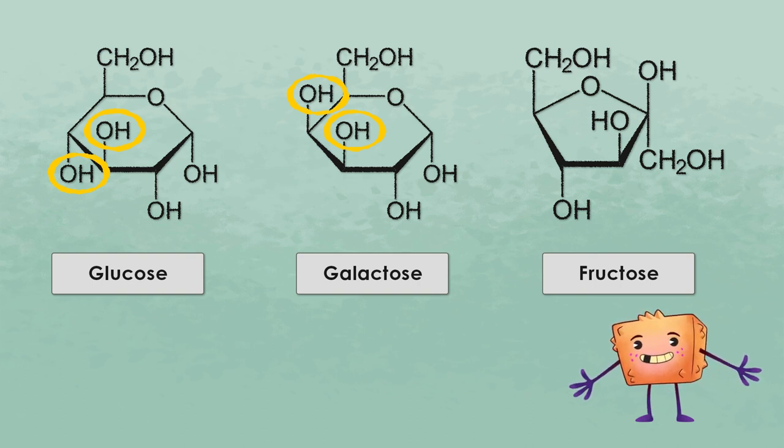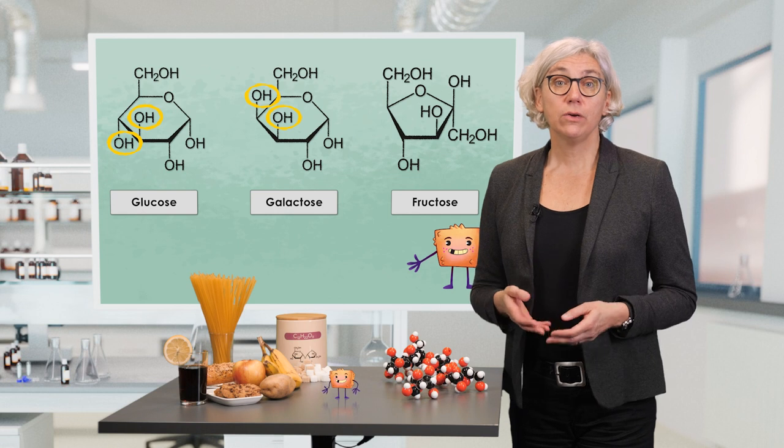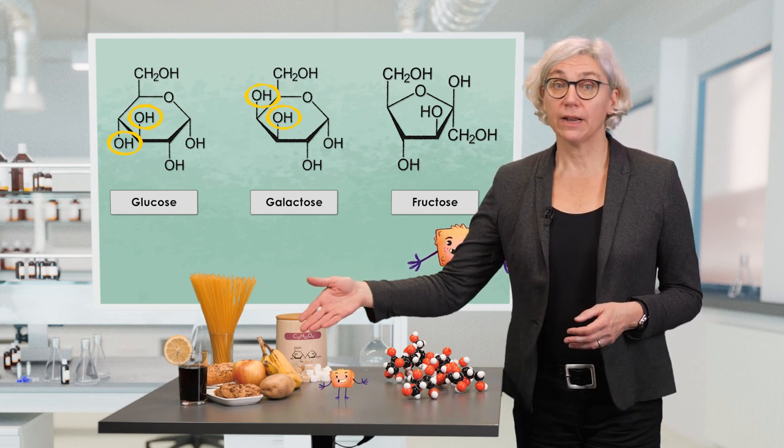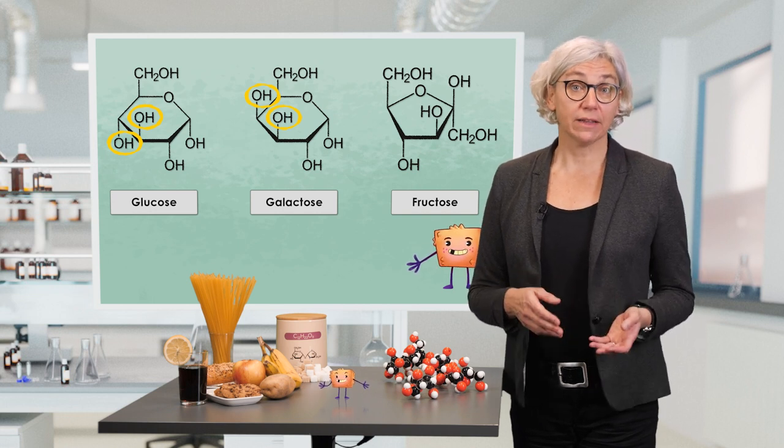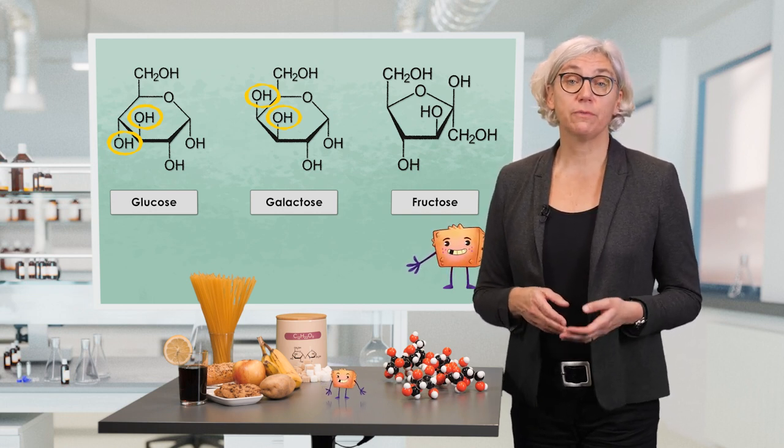All of them taste sweet. But due to their differences in the chemical structures, the metabolism of the human body is different. Glucose and fructose are naturally occurring in a large number of fruits, vegetables or honey, whereas galactose is important for all types of milk products.